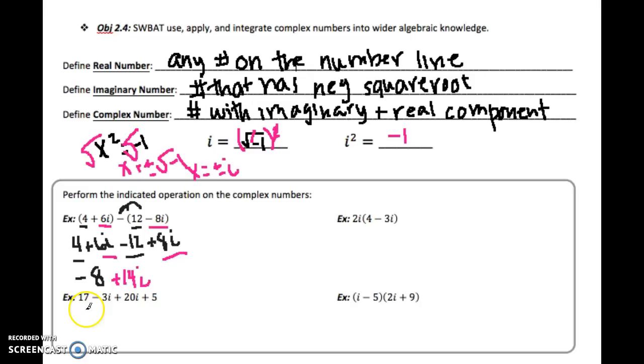Let's go ahead and do the example below. It's similar as well. So my real component here is 17 and 5, so I am going to combine those like terms together, and so I am going to get 22. And then in pink, I'm underlining my imaginary components. So negative 3i plus 20i is going to give us 17i. So again, cannot combine those together to make 39i. We're going to keep it as 22 plus 17i.